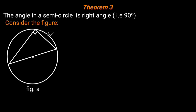Circle geometry, Theorem 3: The angle in a semicircle is a right angle, that is 90 degrees. Consider the figure below — this is the angle in the semicircle, that is 90 degrees.